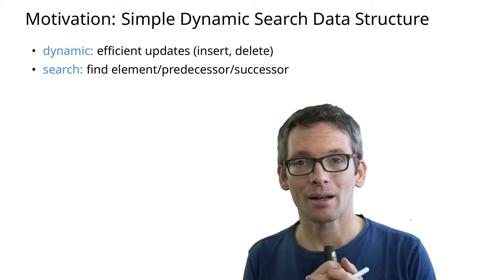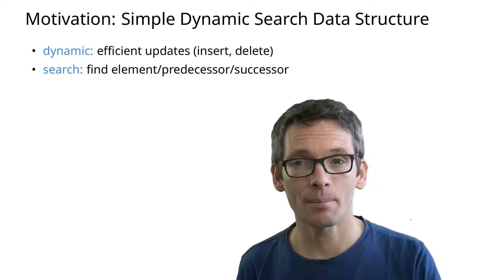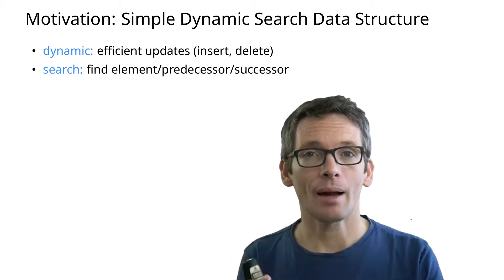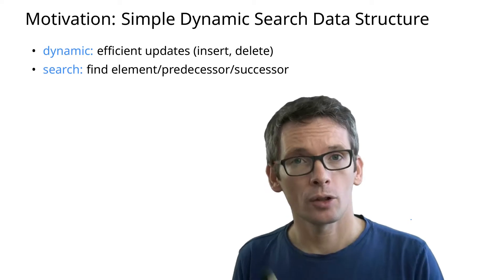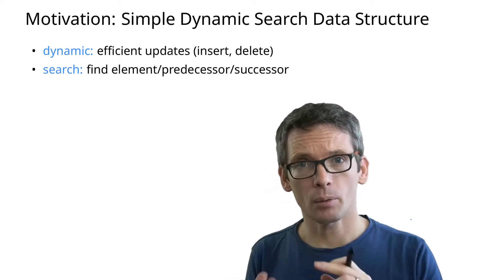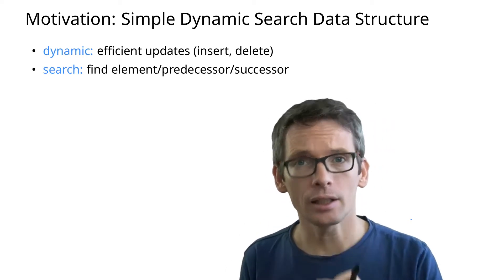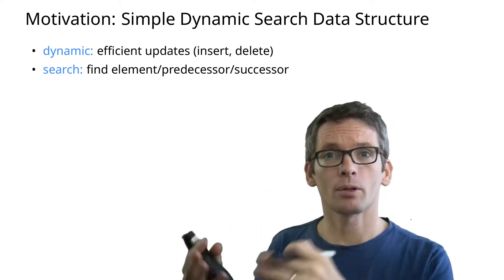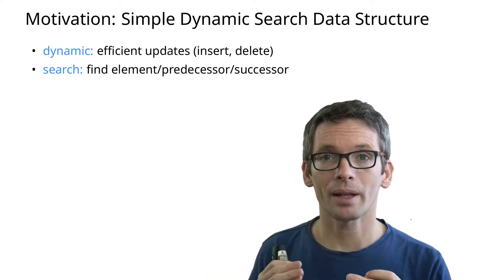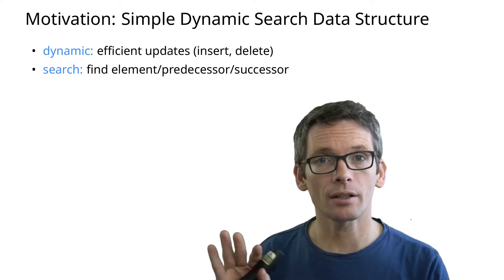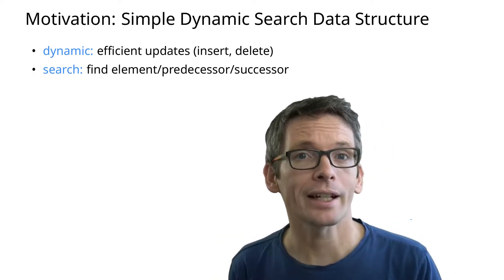What are skip lists about? What we're looking for is a simple dynamic search data structure. Dynamic here means we want to be able to insert and delete efficiently. Search means we want to be able to find an element, but we also want to be able to find the successor or predecessor of an element.